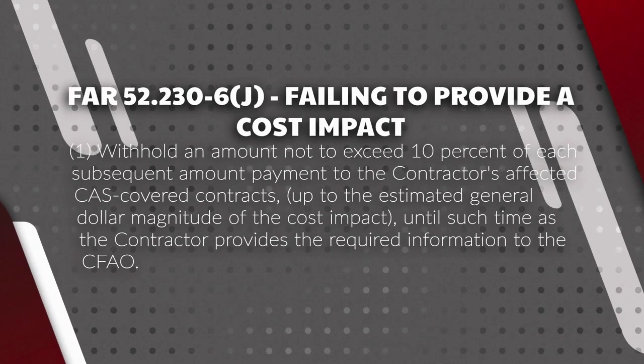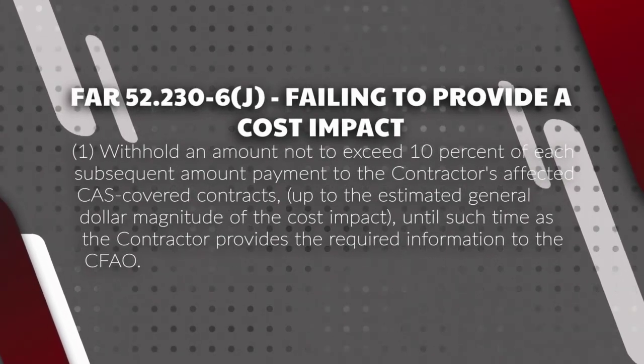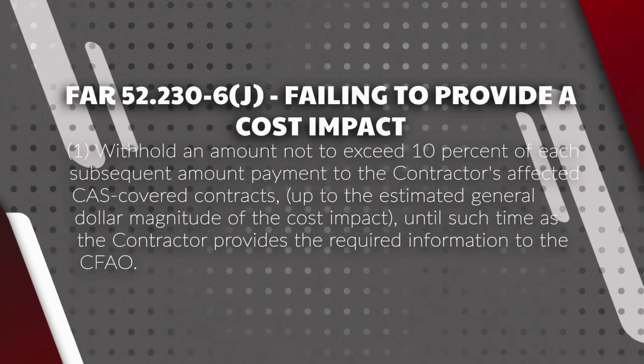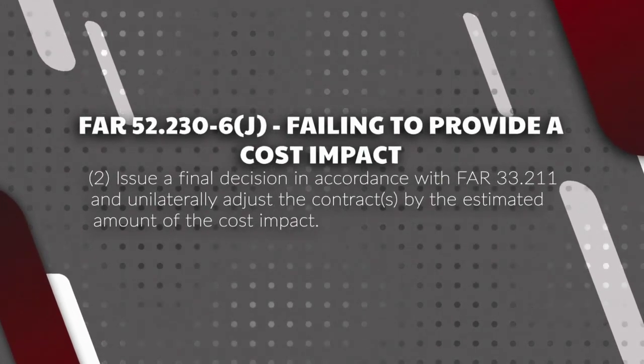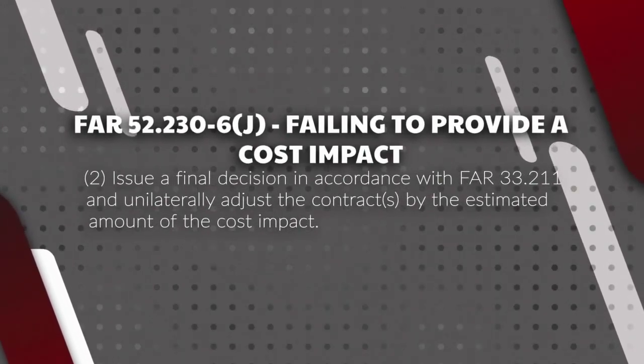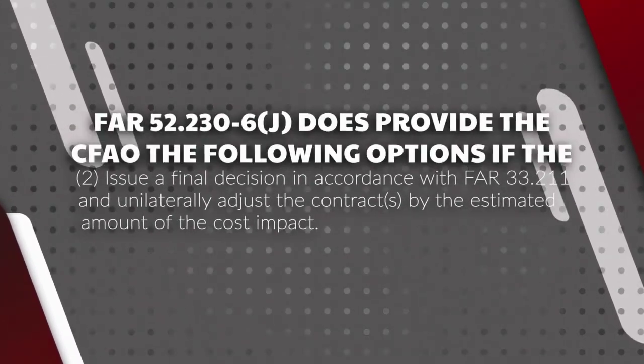The CFAO may withhold an amount not to exceed 10% of each subsequent payment to the contractor's affected CAS contracts, up to the estimated general dollar magnitude of the cost impact, until the contractor provides the required information. Alternatively, the CFAO may issue a final decision in accordance with FAR 33.211 and unilaterally adjust the contracts by the estimated amount of the cost impact. I hope these answers have helped you understand more about the CAS cost impact requirements. If you have any questions, feel free to reach out to myself or anyone at Redstone Government Consulting and we will be happy to assist you.